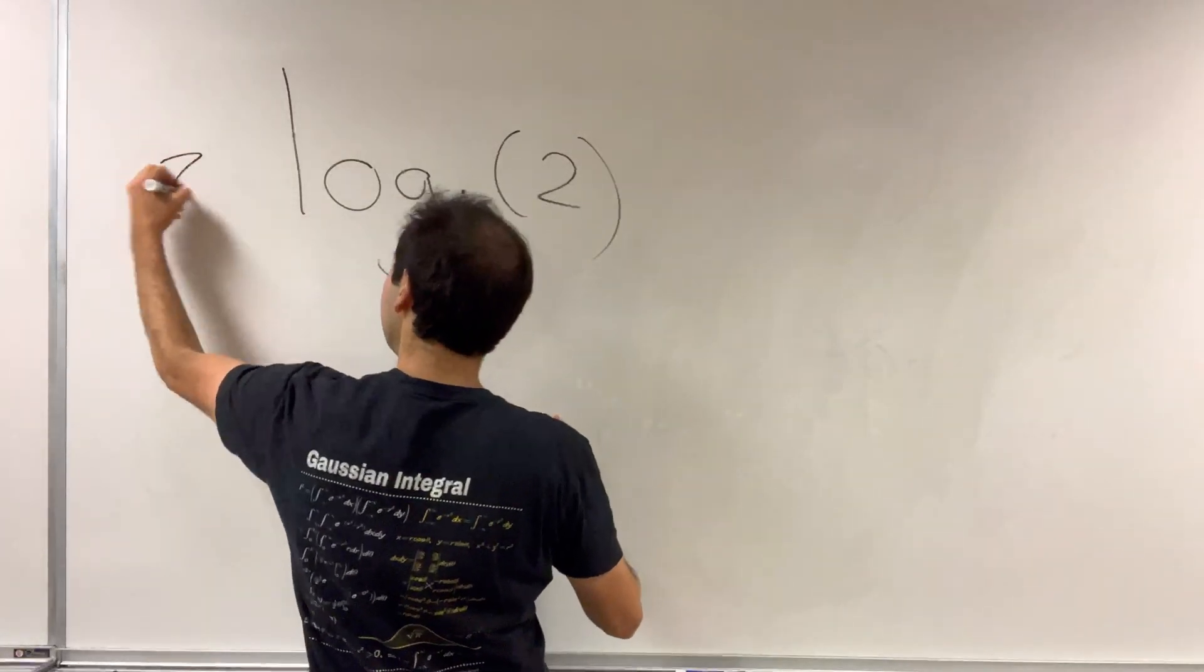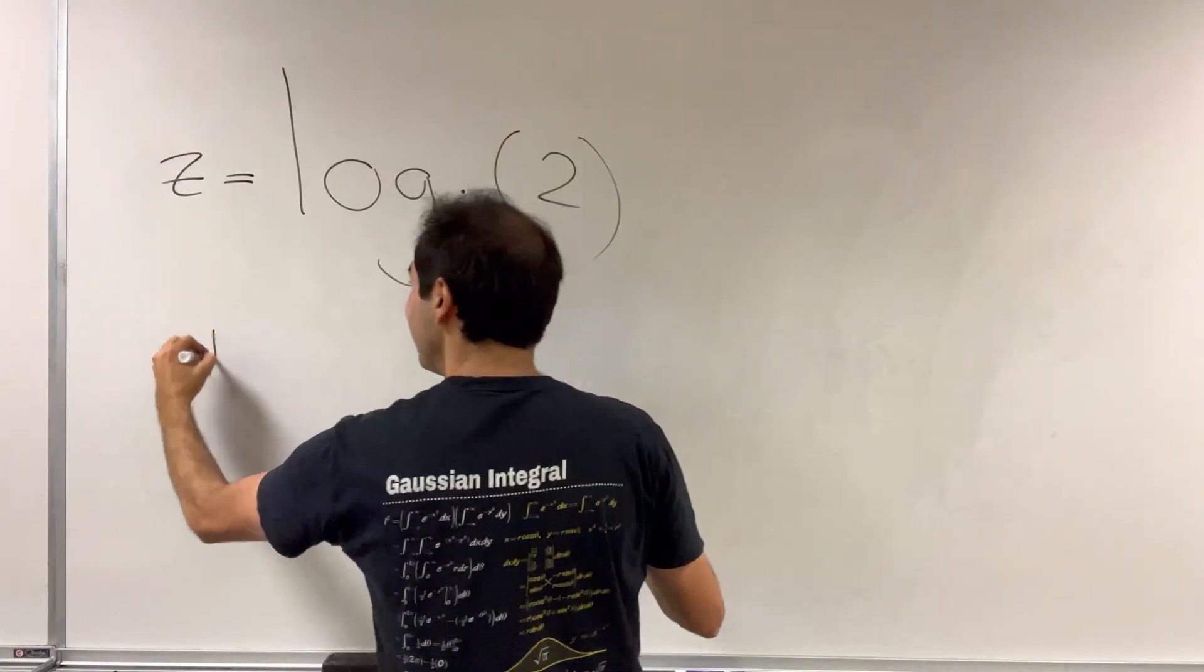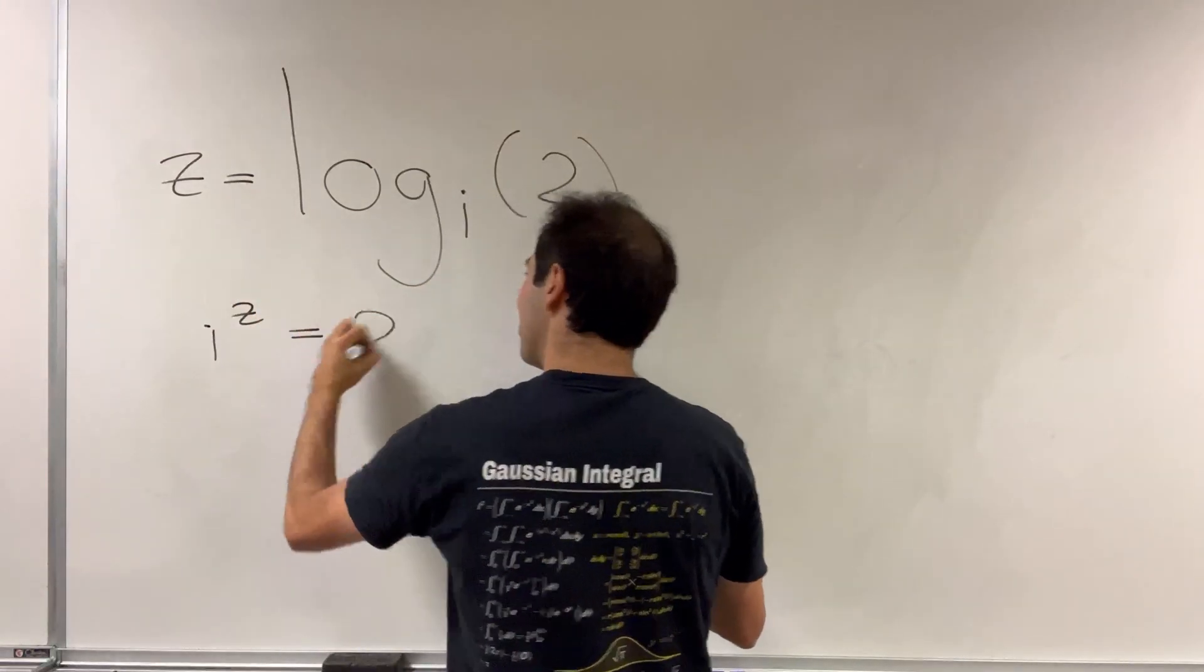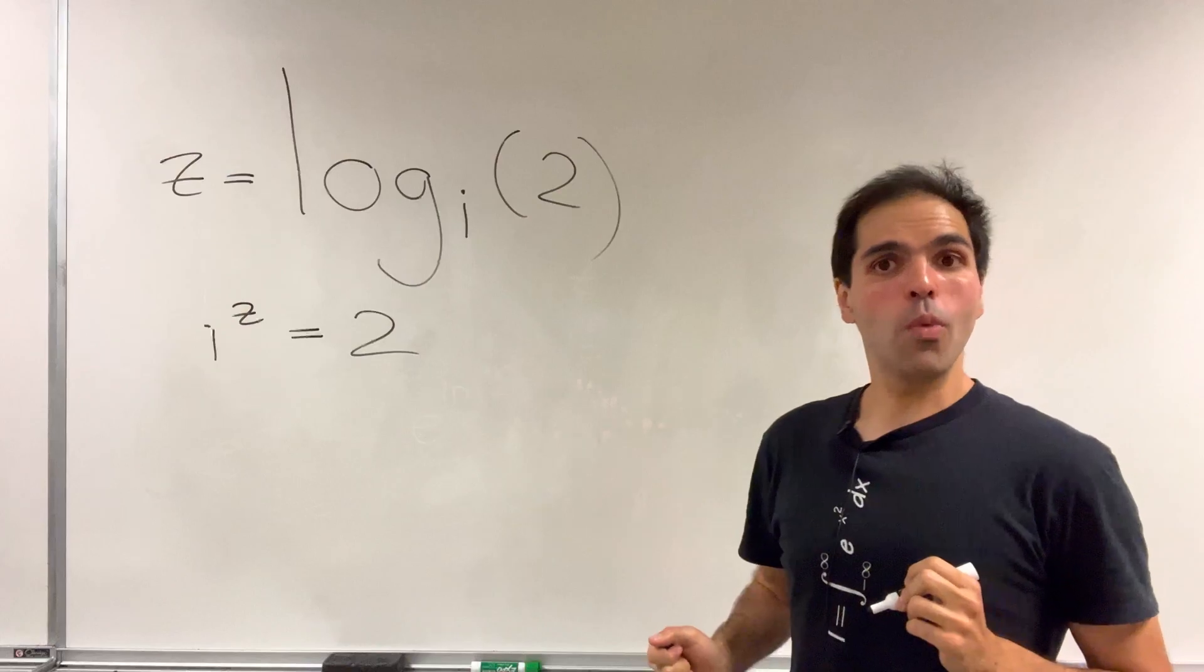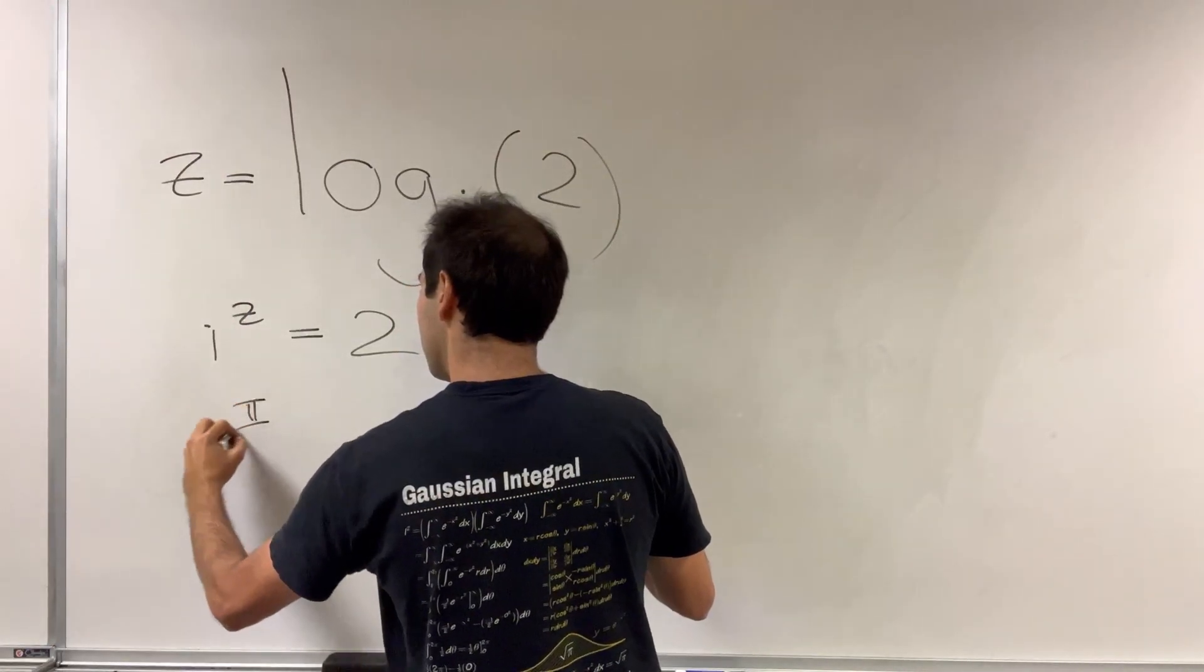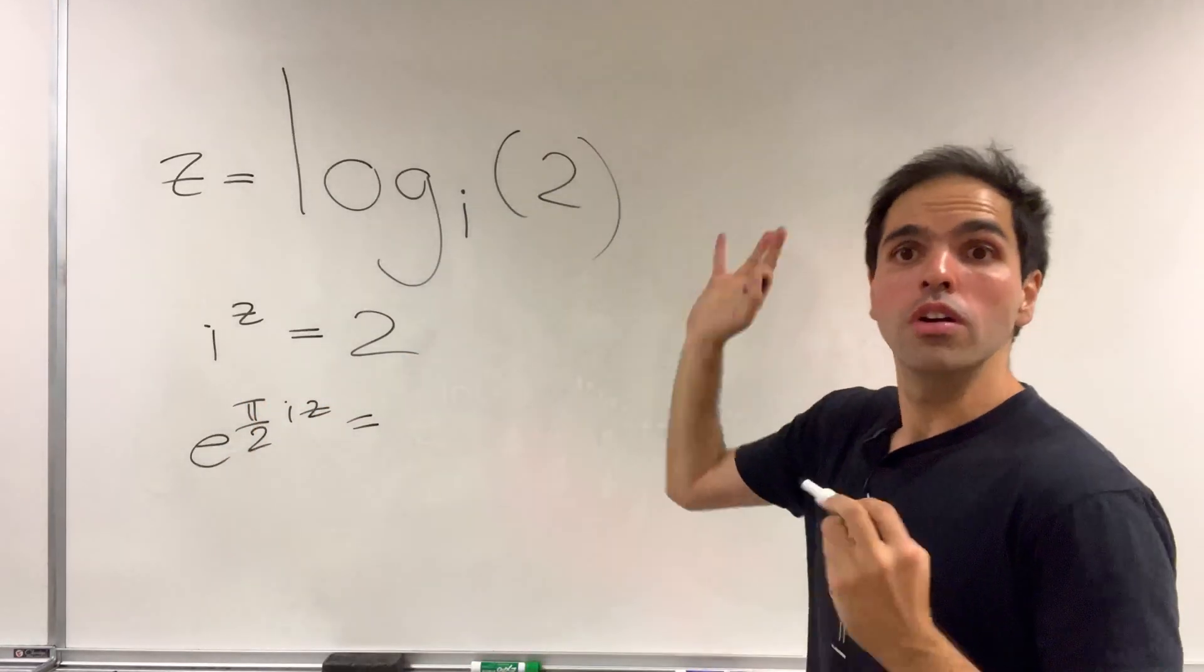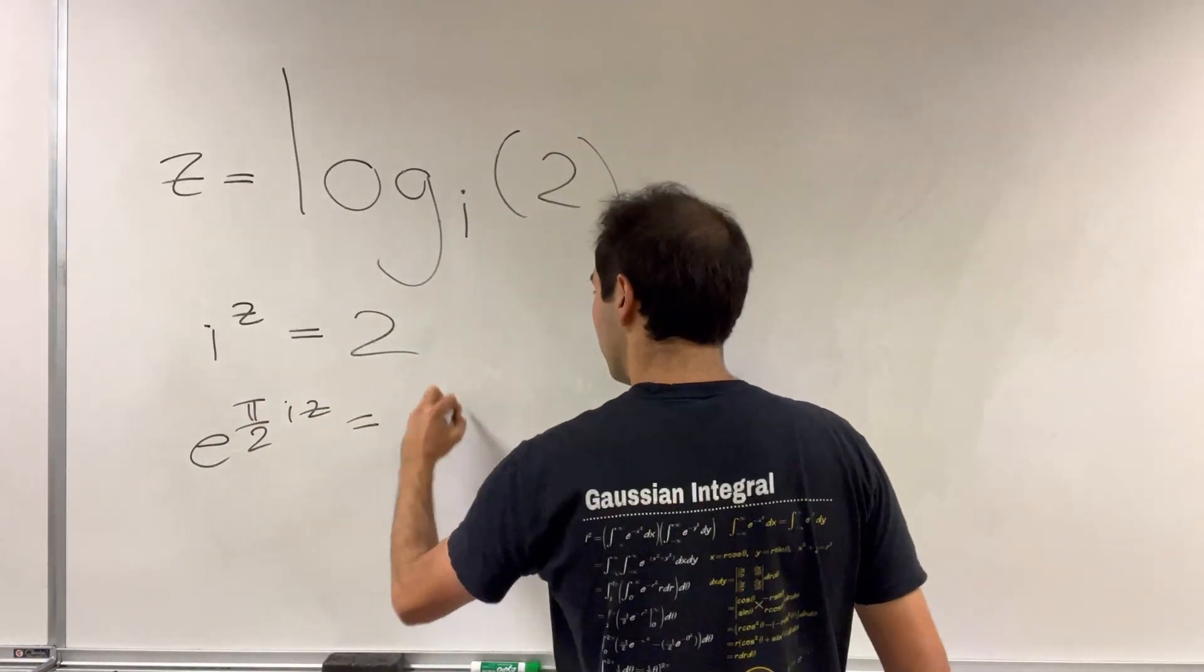Because if z is log base i of 2, then i to the z equals 2. But what is i? It's just e to the pi over 2i, so e to the pi over 2i times z equals 2, which is e to the ln of 2.